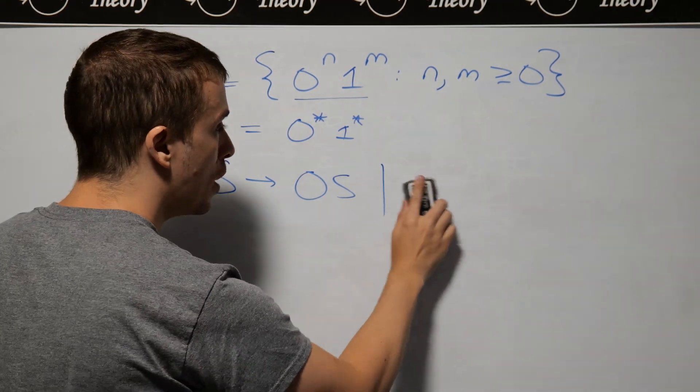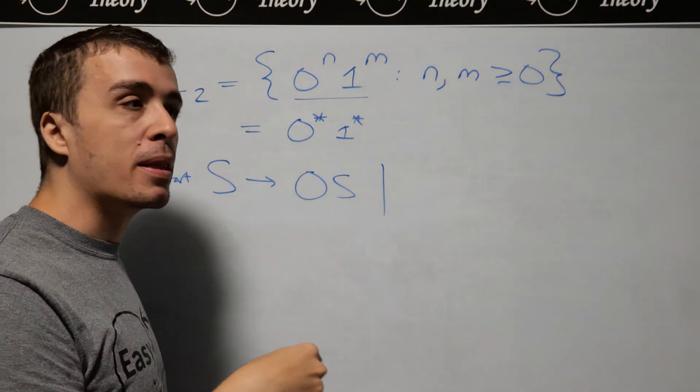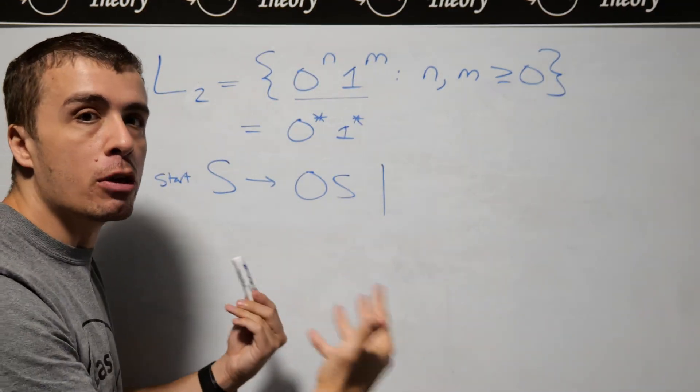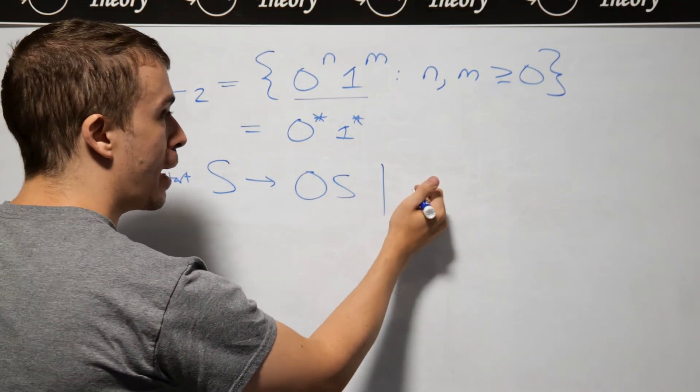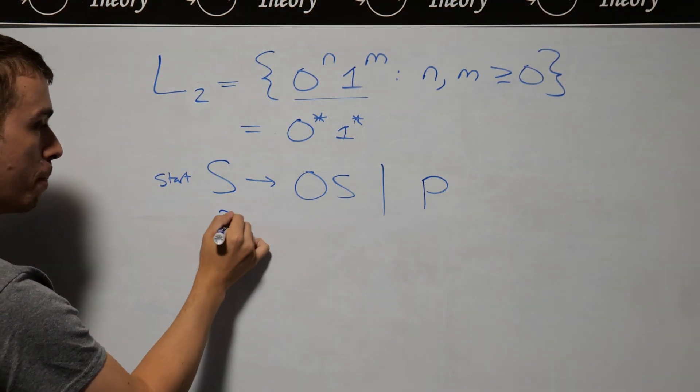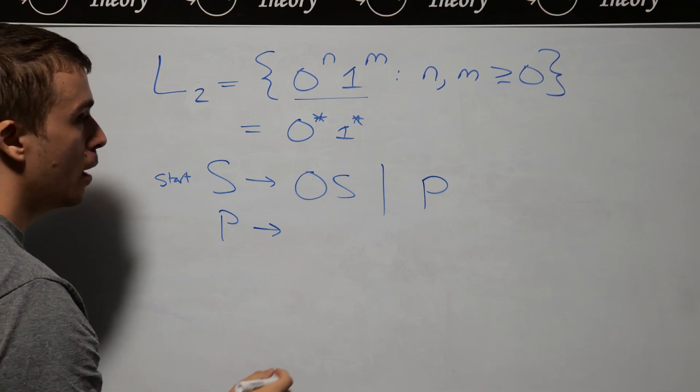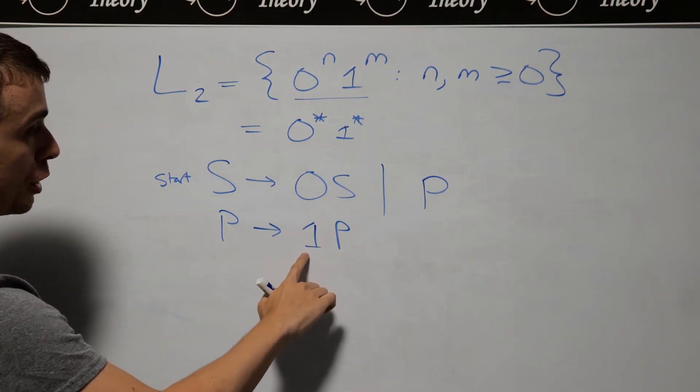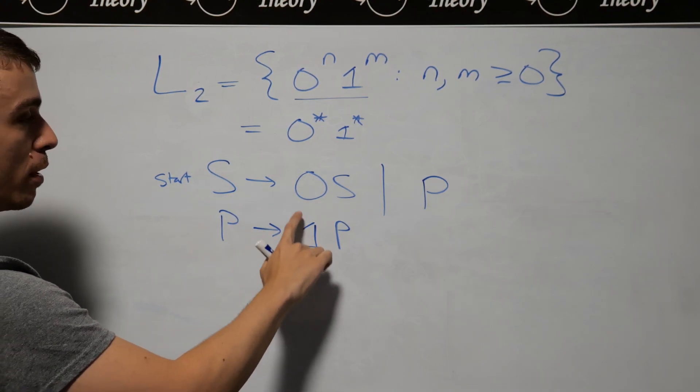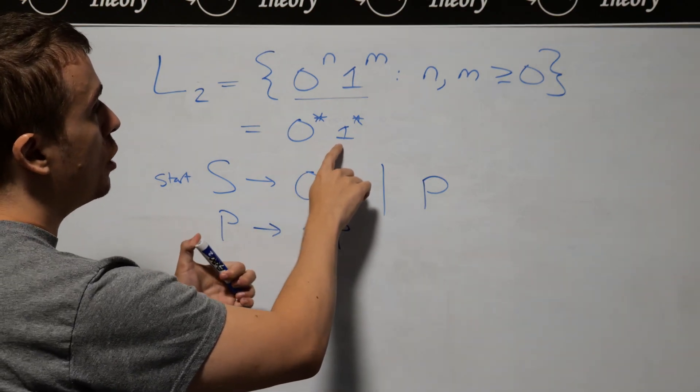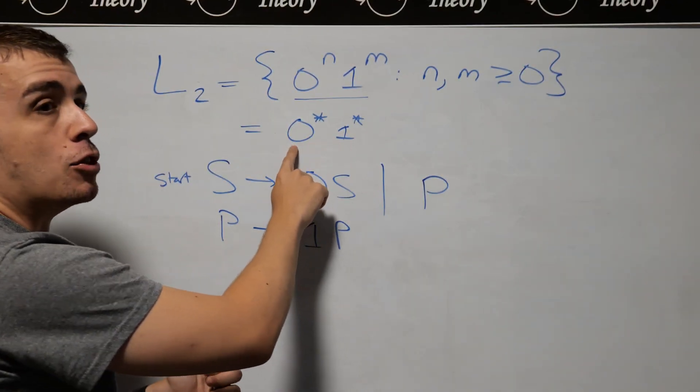So what we want to do is go to some other place where we can't access this rule anymore, and then generate the ones there. So I'm going to go to a variable called P. P is a completely new variable, where I can now make the ones here. Just like with the S variable where it can make zeros, I can make ones here. And there's no relationship other than the ones being after the zeros.